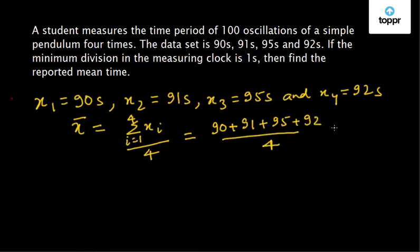And now if we calculate this, we will get 92 seconds. So we have found the mean of the sample data. Now let us calculate the error in the measurement.